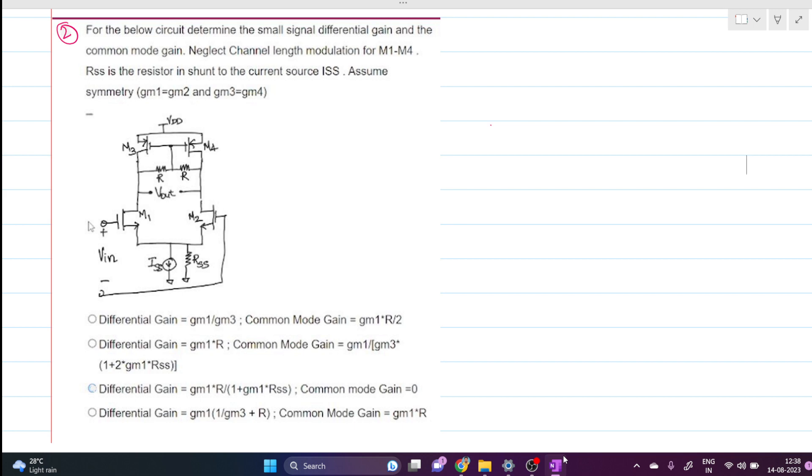Assume symmetry, like gm1, gm2, gm3, and gm4 are equal, where gm1 equals gm2 and gm3 equals gm4. To solve this type of differential pair circuit, we have to look first if the circuit is symmetrical or not. Here we can see this is a PMOS and this is a resistance connected in this manner, and here also a PMOS and a resistance connected in the same manner.